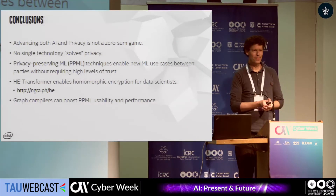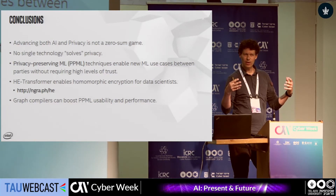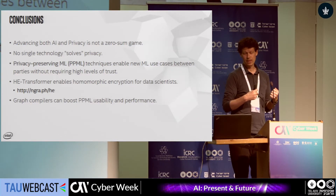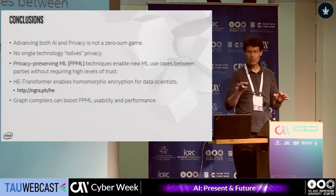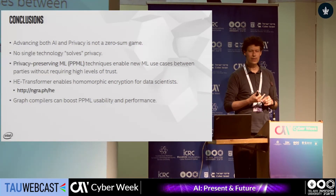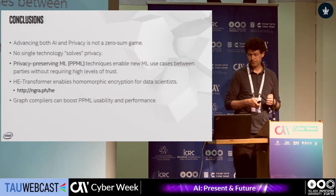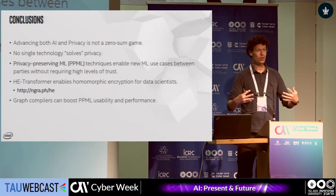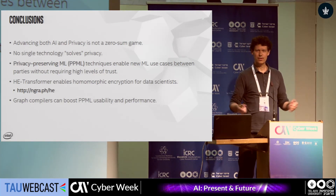In conclusion, I'm excited that AI and privacy — which seem on a collision course — need not be a zero-sum game. Progress in AI does not have to come at the expense of privacy. That said, no single technology solves privacy entirely; we still have a lot of work to do as developers, regulators, and users. There is tremendous innovation in this space, and at Intel we're focused on making these techniques more performant, usable, and accessible to the broader world. Thank you.